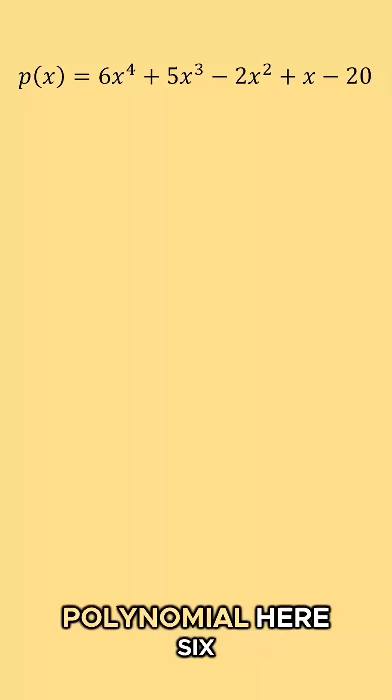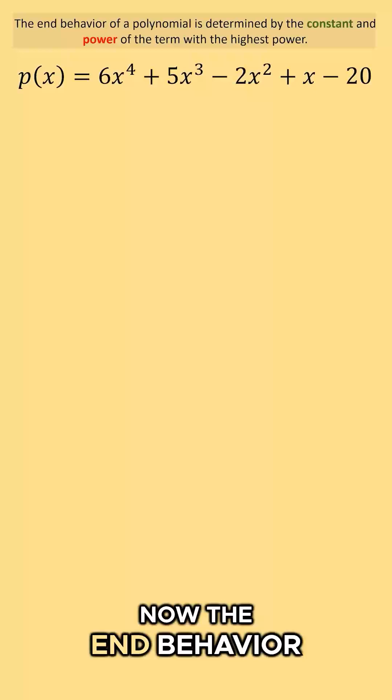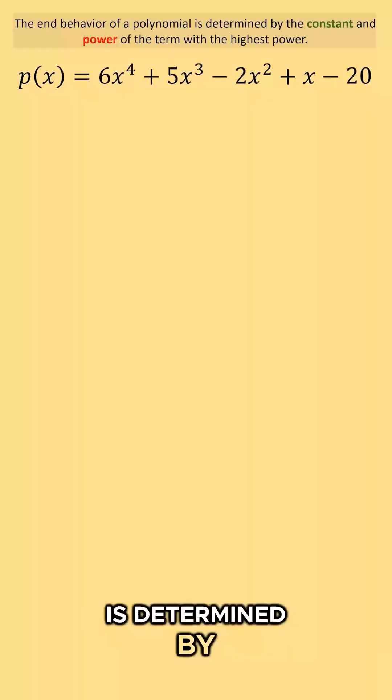Let's look at this polynomial here: 6x to the 4th plus 5x to the 3rd minus 2x to the 2nd plus x minus 20. The end behavior of a polynomial is determined by the constant and power of the term with the highest power.